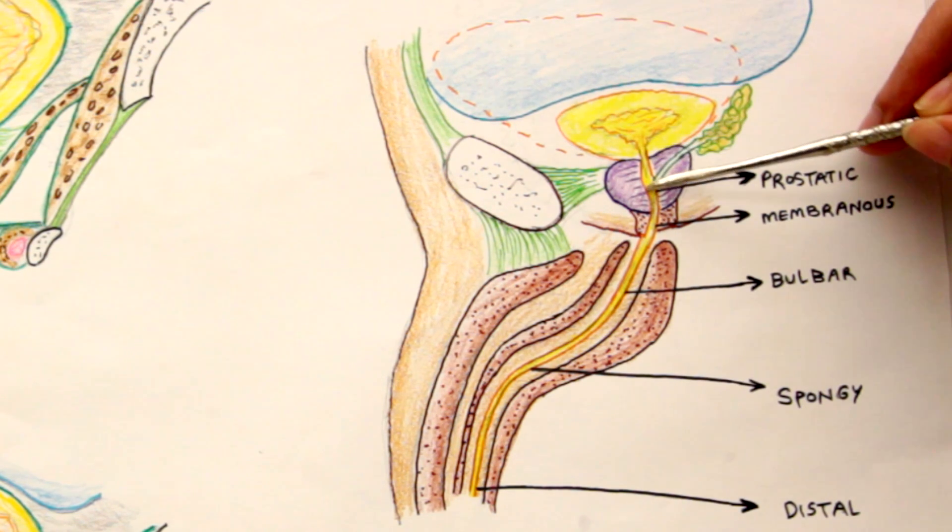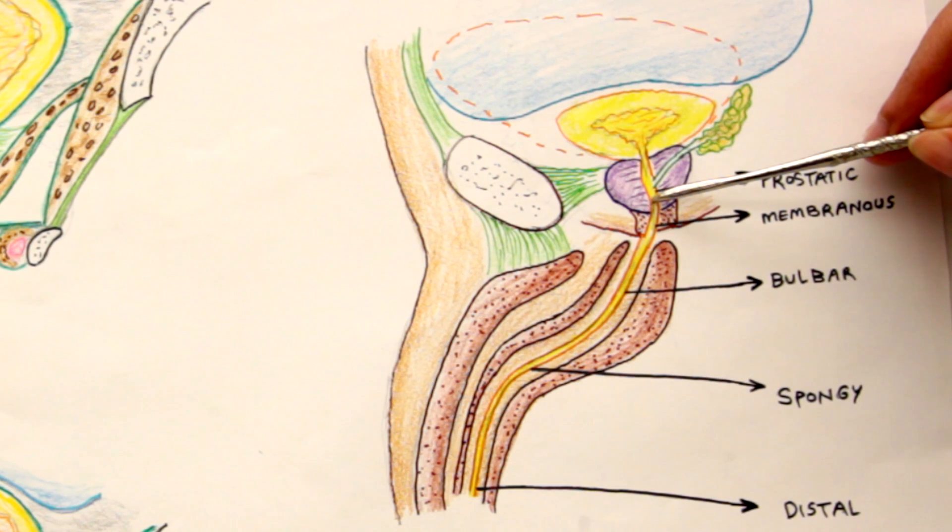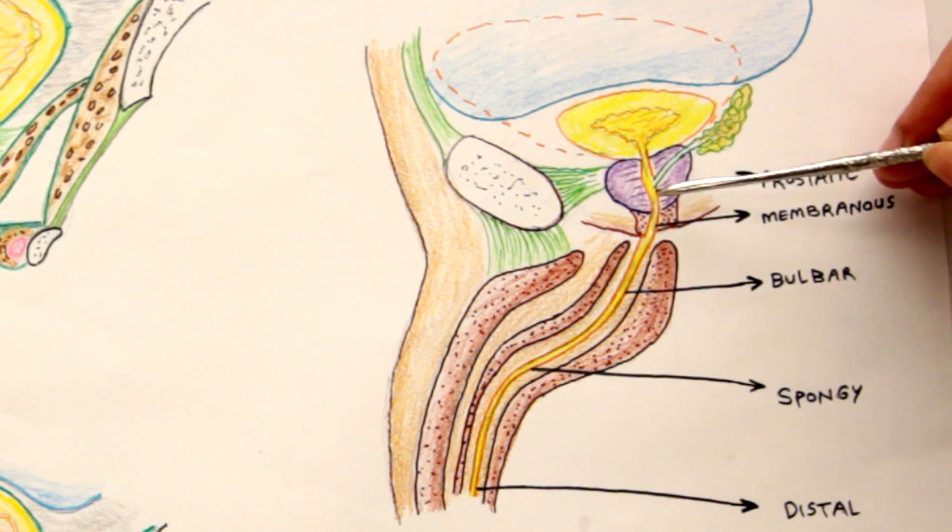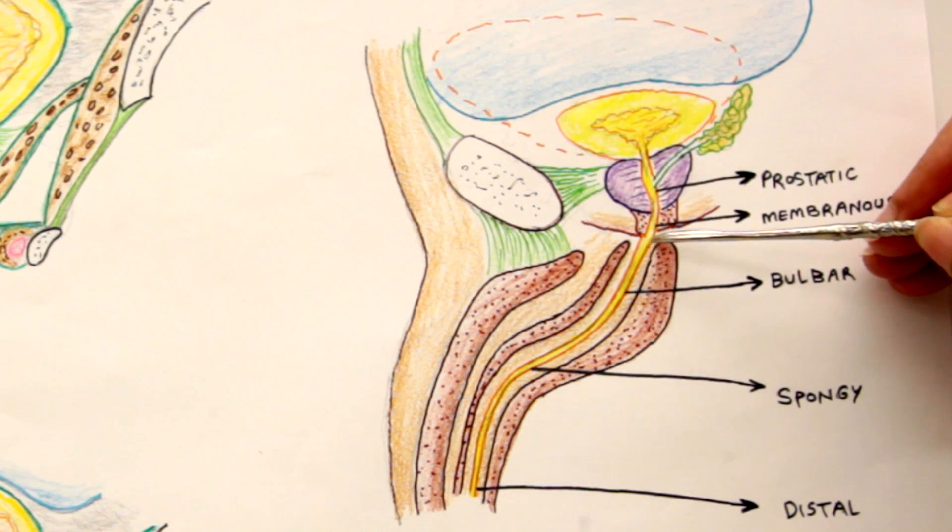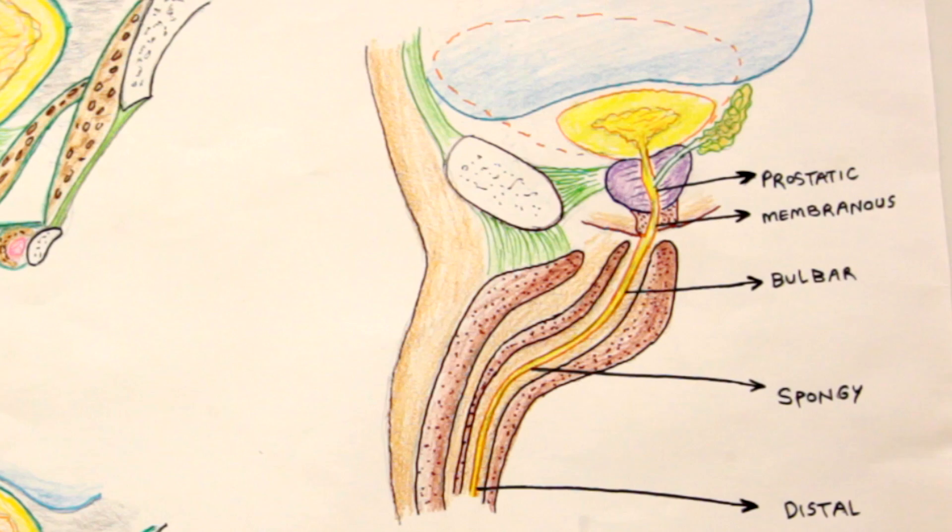The prostatic is first. The neck of the bladder is where the urethra starts—it's the beginning of the urethra. The prostatic urethra is the widest and receives the ejaculatory ducts and the ducts of the prostate gland. Then the membranous urethra, which crosses the UG diaphragm. Then the penile urethra starts from the bulbar part—bulbar, spongy, and distal.